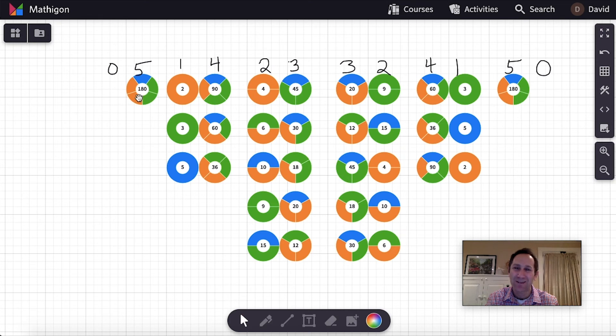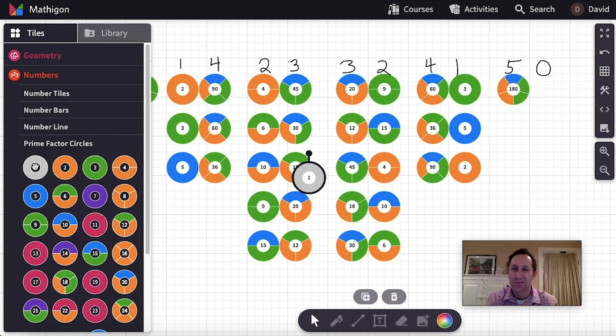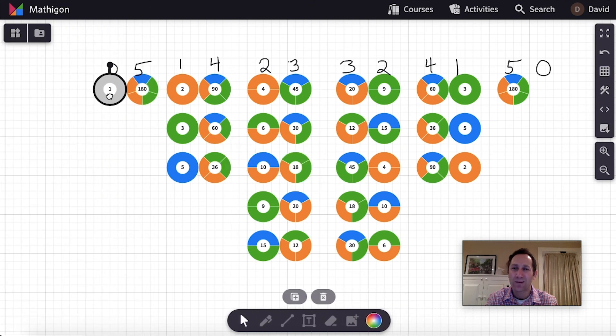But there's a number missing here. It's the number that goes with 180 to multiply to give 180. And that's in the prime factor circle. There's the number one. So I put the one here just to complete the visual. Here we go. And so you have all the factor pairs of 180.